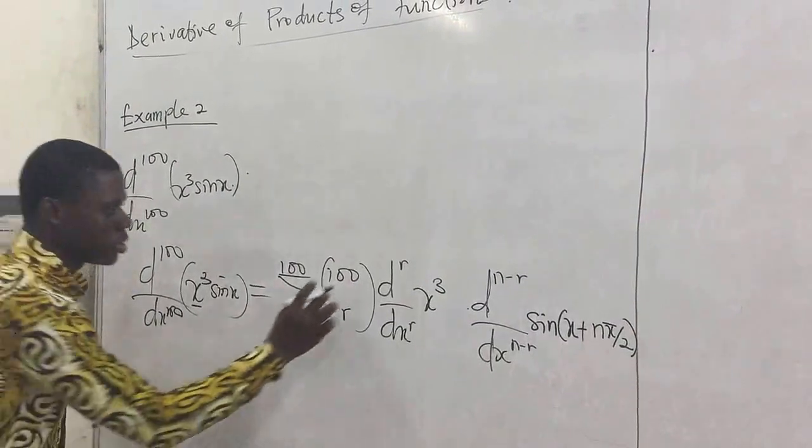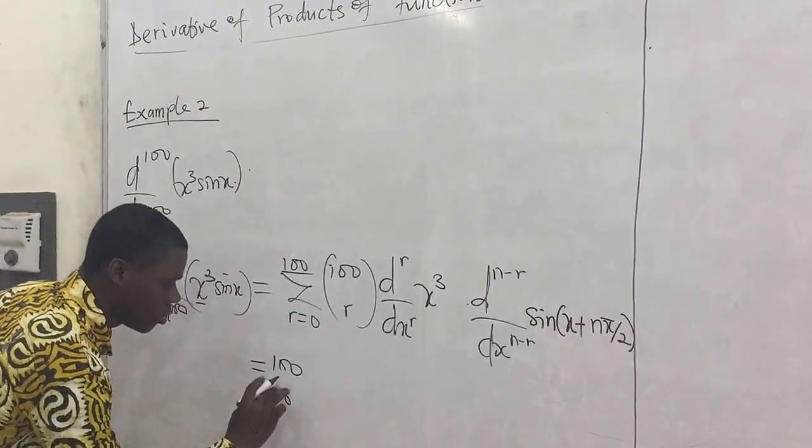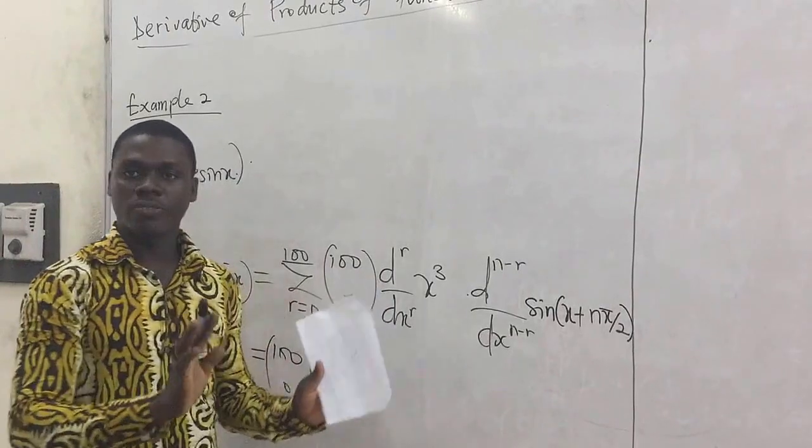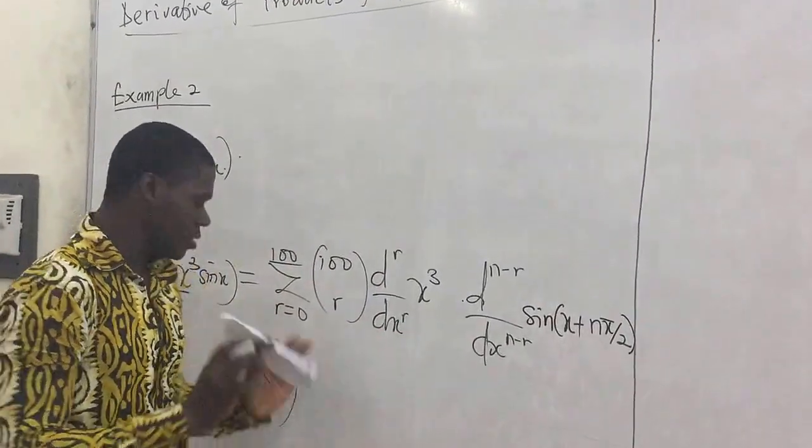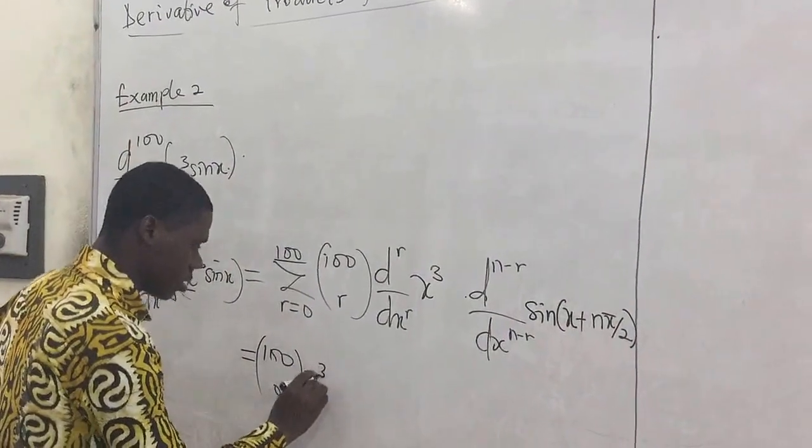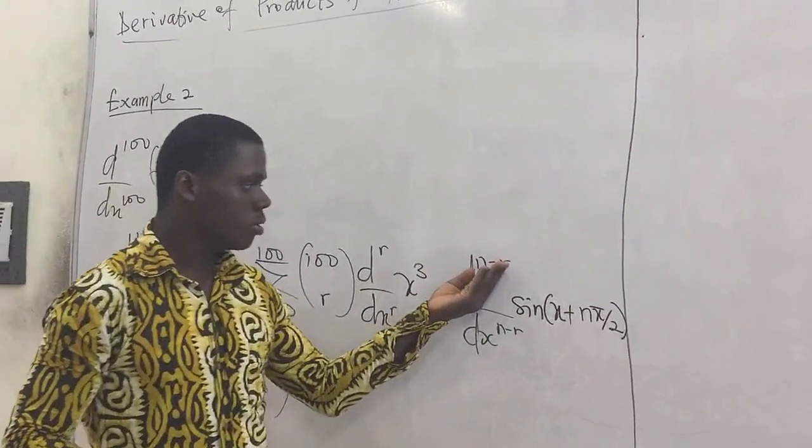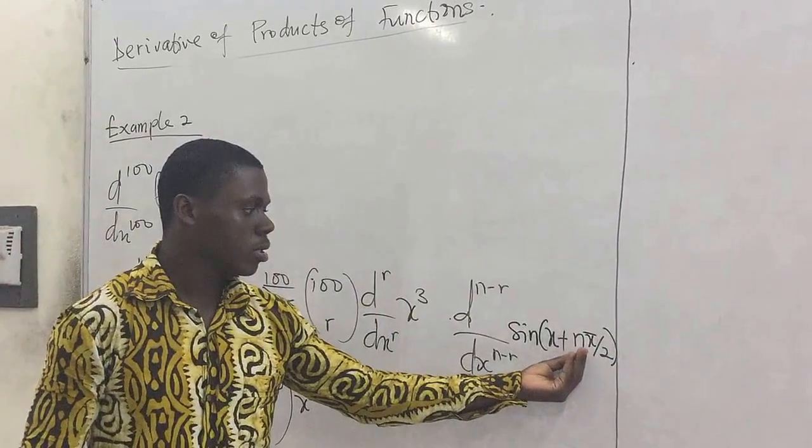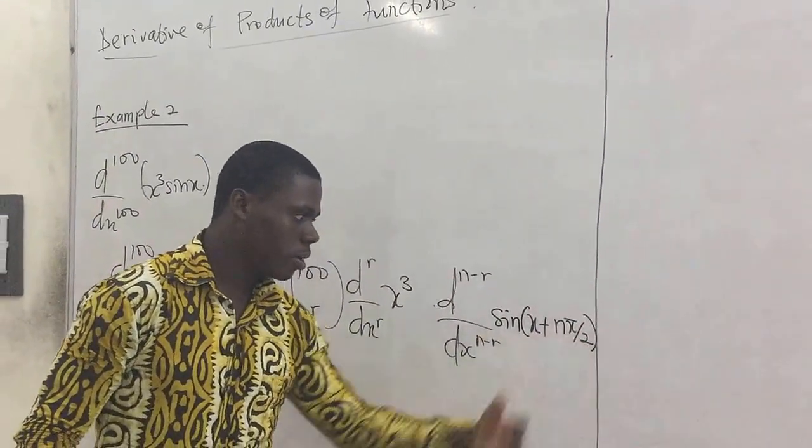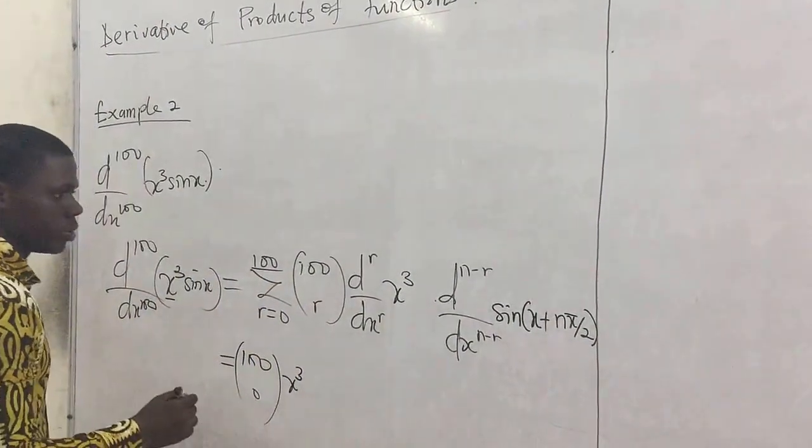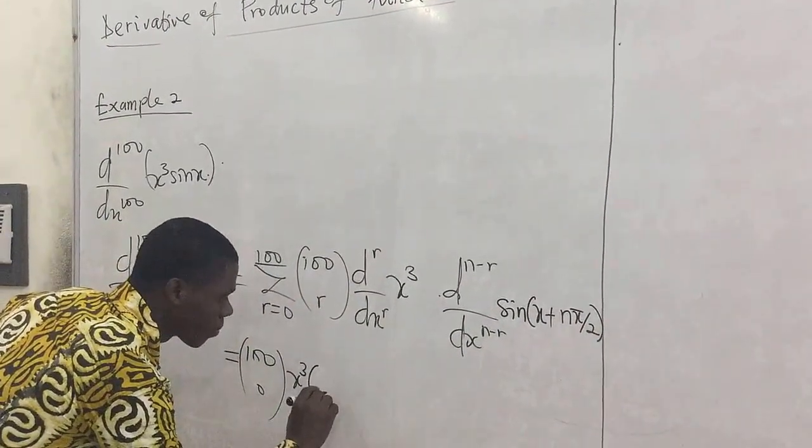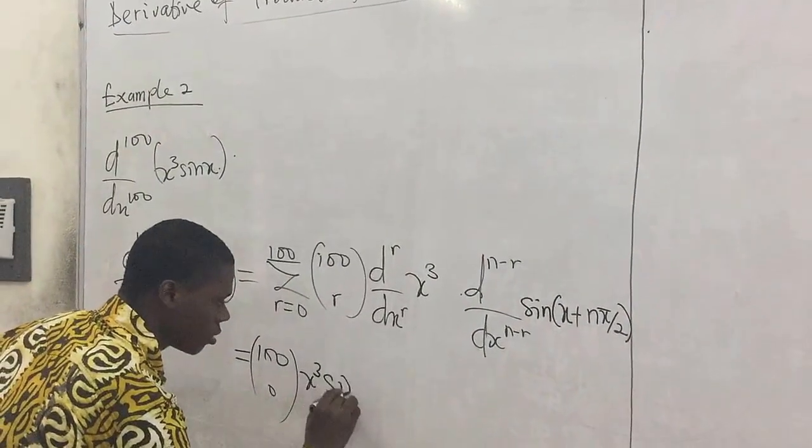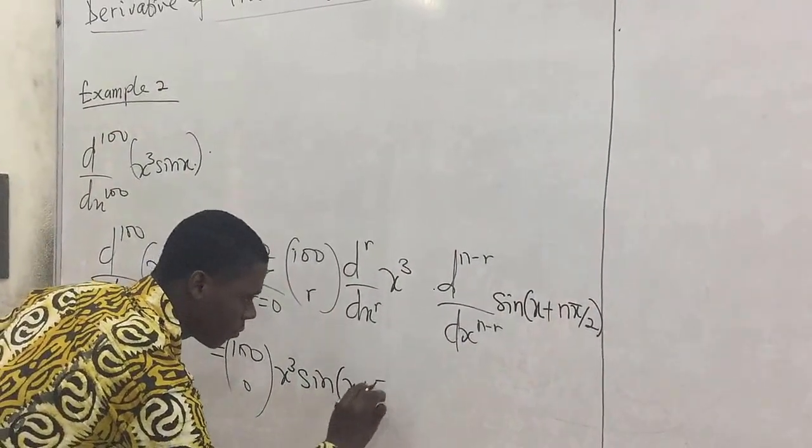Starting with r is 0, it means that we have 100 combination 0. And then this becomes 0. If this is 0, it means that we are not differentiating it, 0 derivative. So it's still like that. So we describe it as x cubed. Let's come here. If r is 0, it means that n is 100. So differentiating this one 100 times means substituting 100 for n. So we put 100 here, multiply by sin x plus 50 pi.